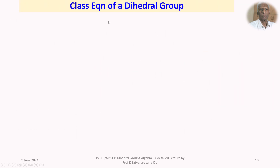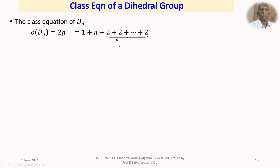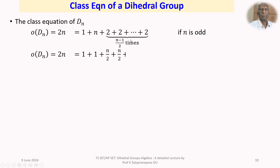The class equation of D_N: the order 2N equals 1 + N + 2 + 2 + … (repeated (N−1)/2 times) when N is odd. When N is even, 2N equals 1 + 1 + N/2 + N/2 + 2 + 2 + … (repeated (N−2)/2 times). These formulas are very important and questions come on them.